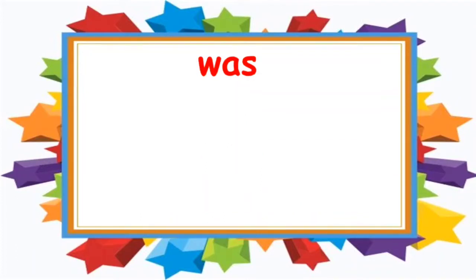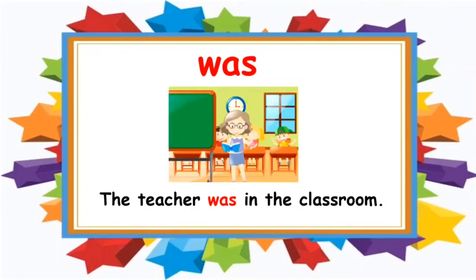The next word is 'was.' Children, look at the word and repeat after me — was. What does 'was' mean? Was means to be present. I have used the word 'was' in a sentence: The teacher was in the classroom. You can see the teacher in the classroom.